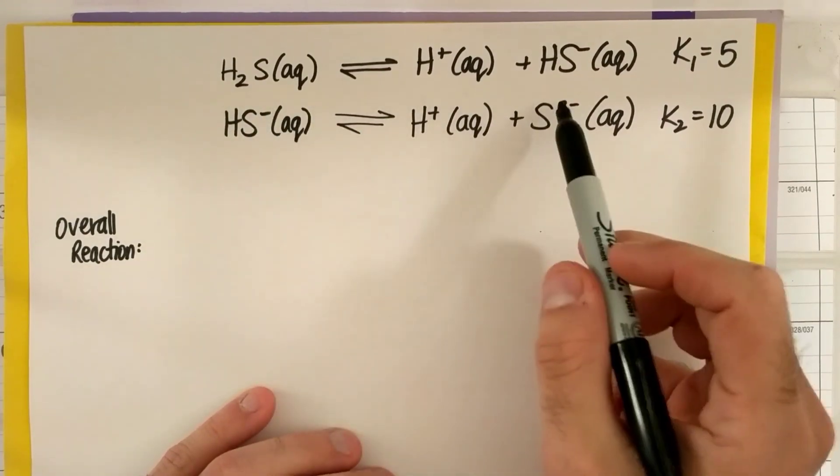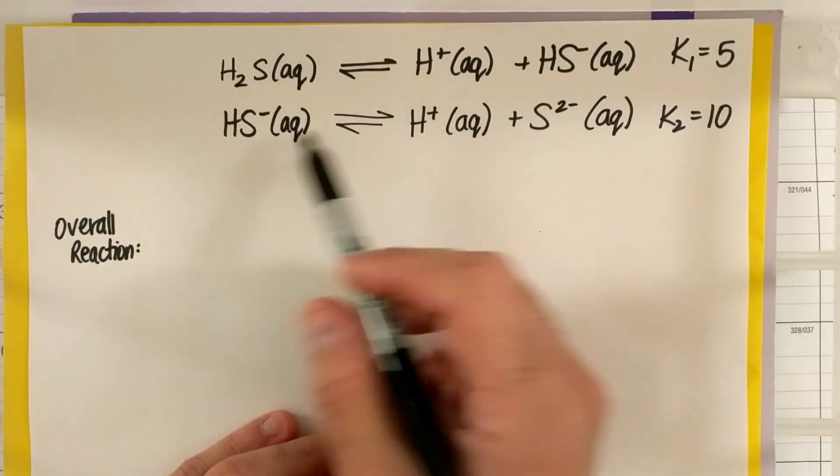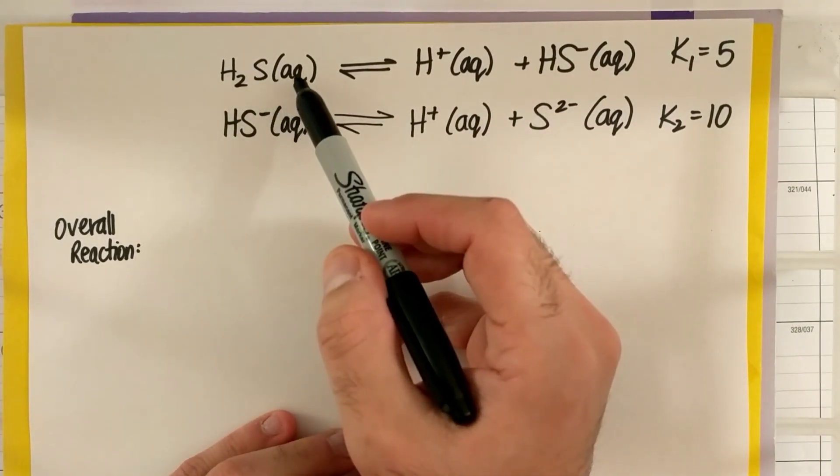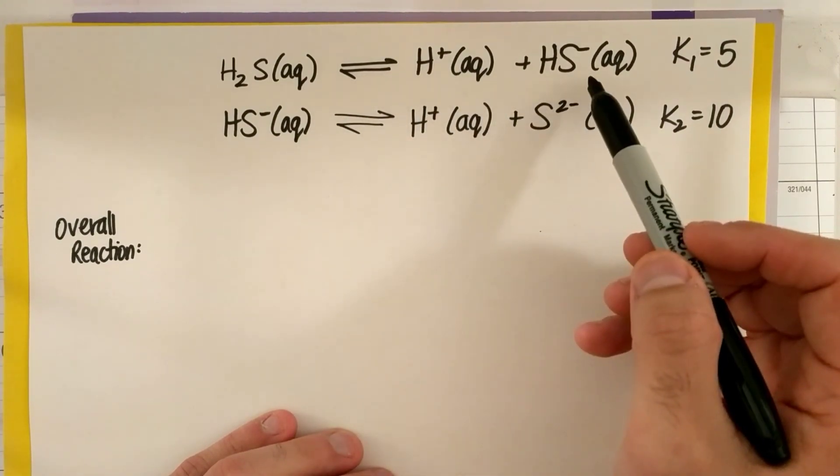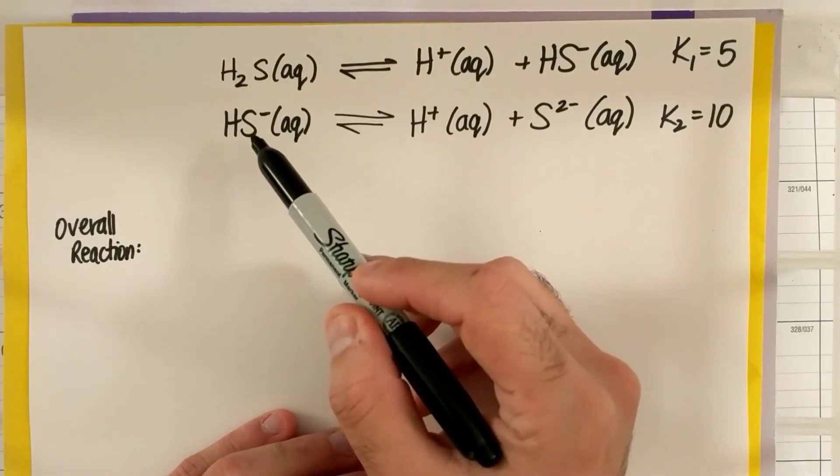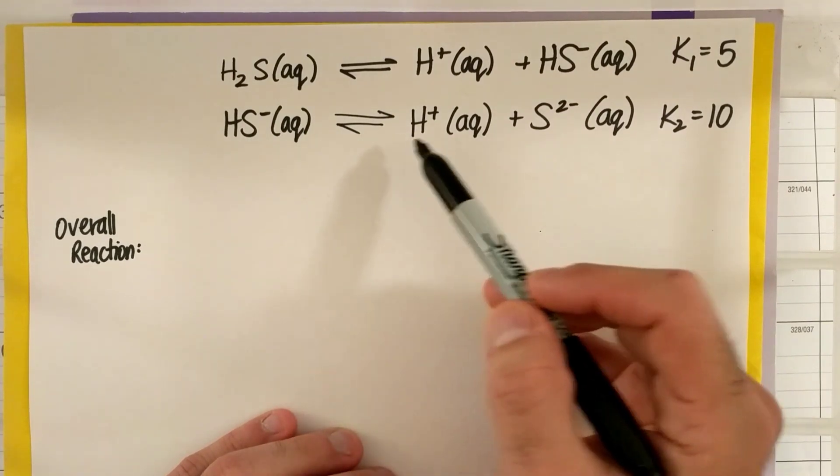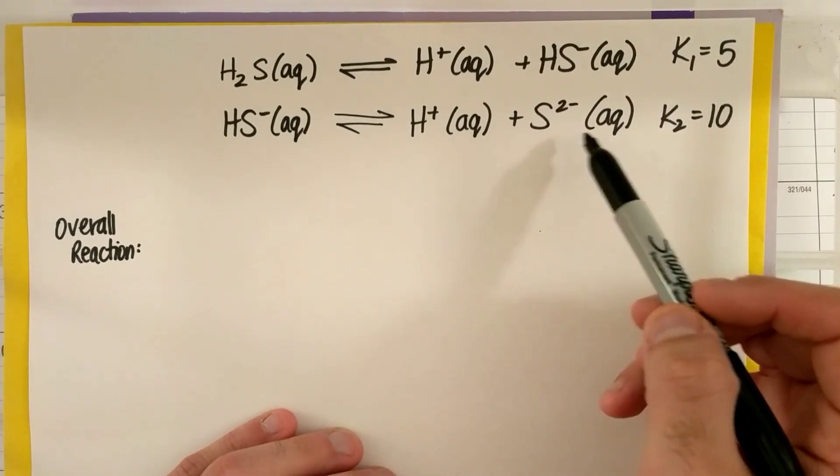So we have an expression where we have two equilibriums. We have H2S aqueous in equilibrium with H plus aqueous plus HS minus aqueous, and then we have HS minus aqueous in equilibrium with H plus aqueous and S2 minus aqueous.